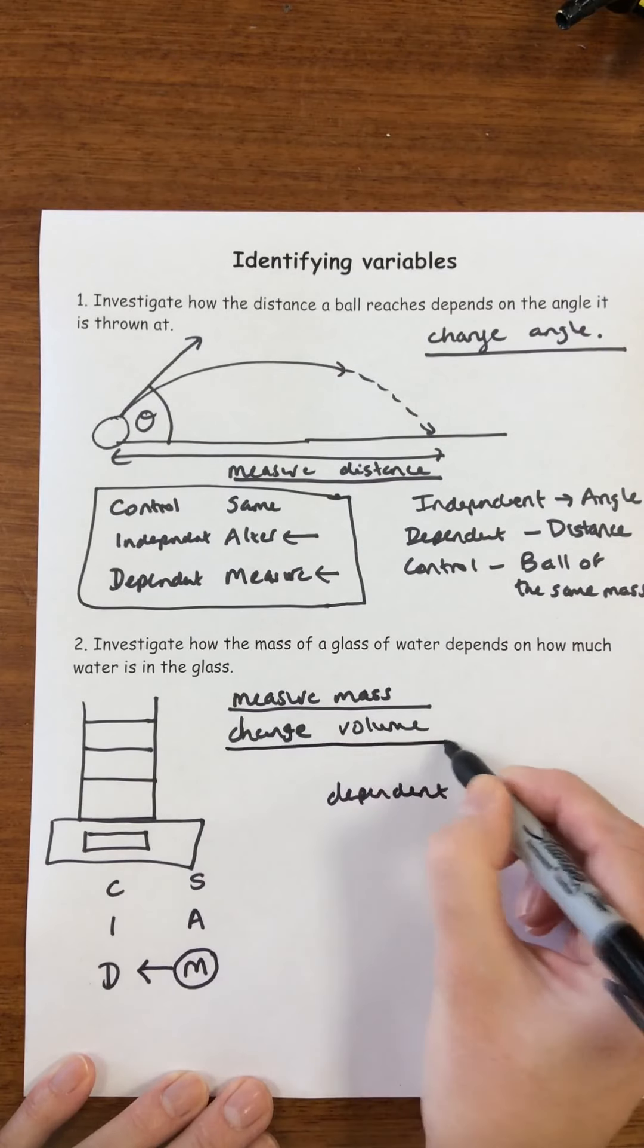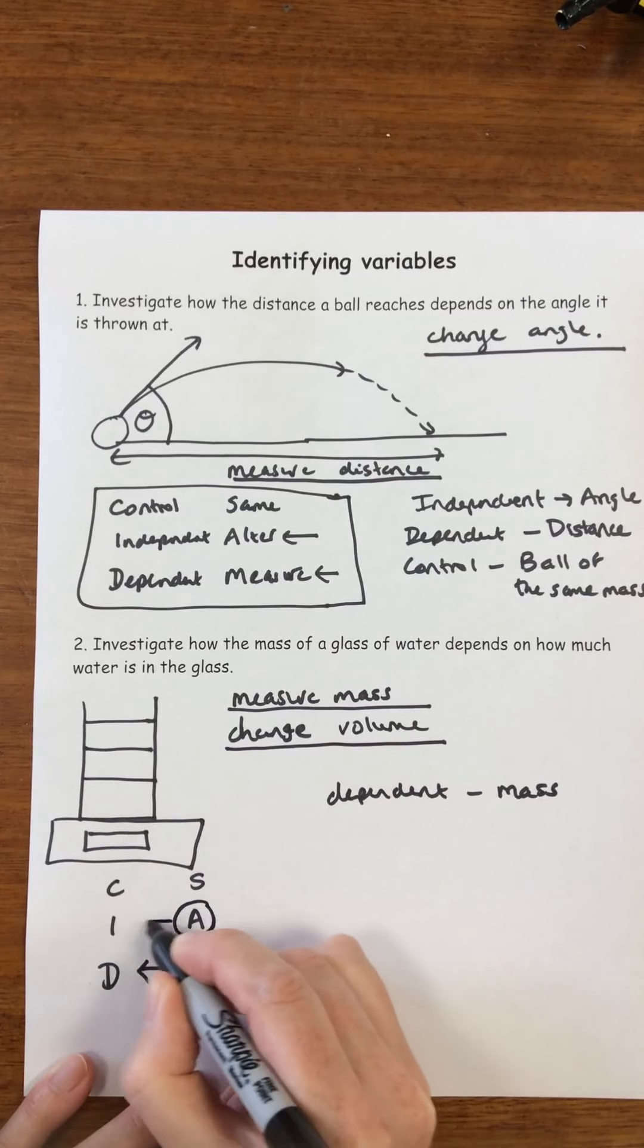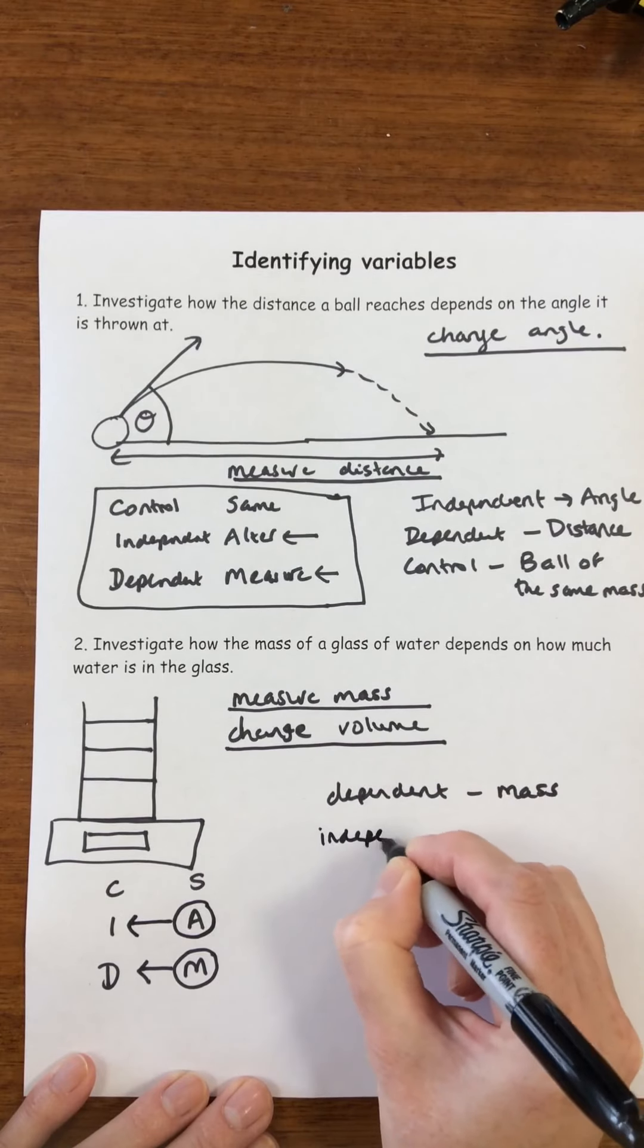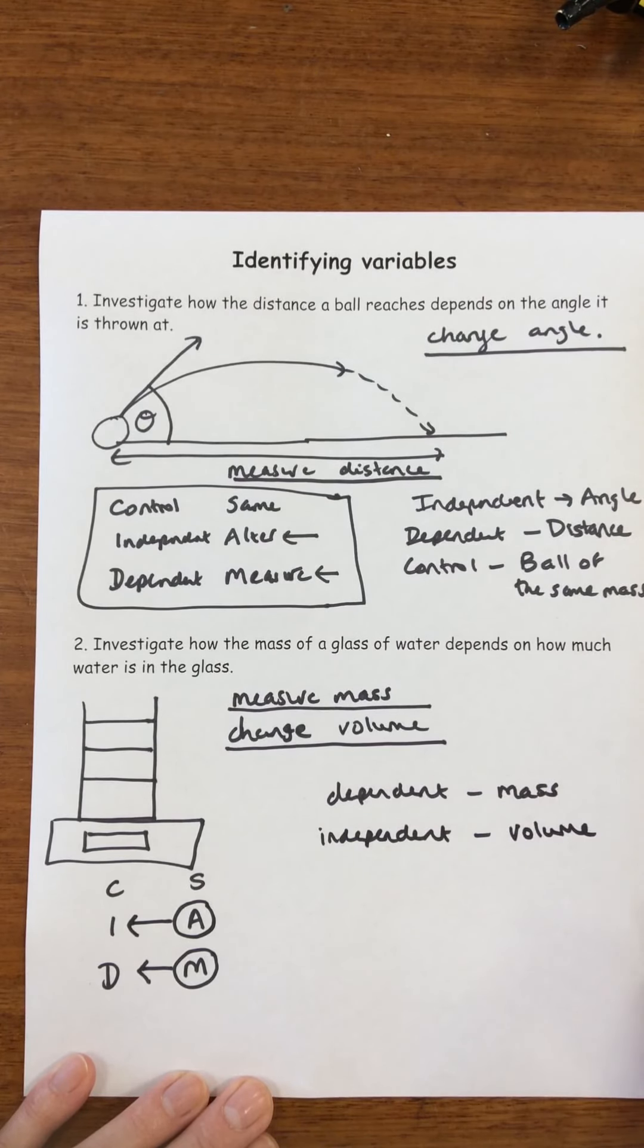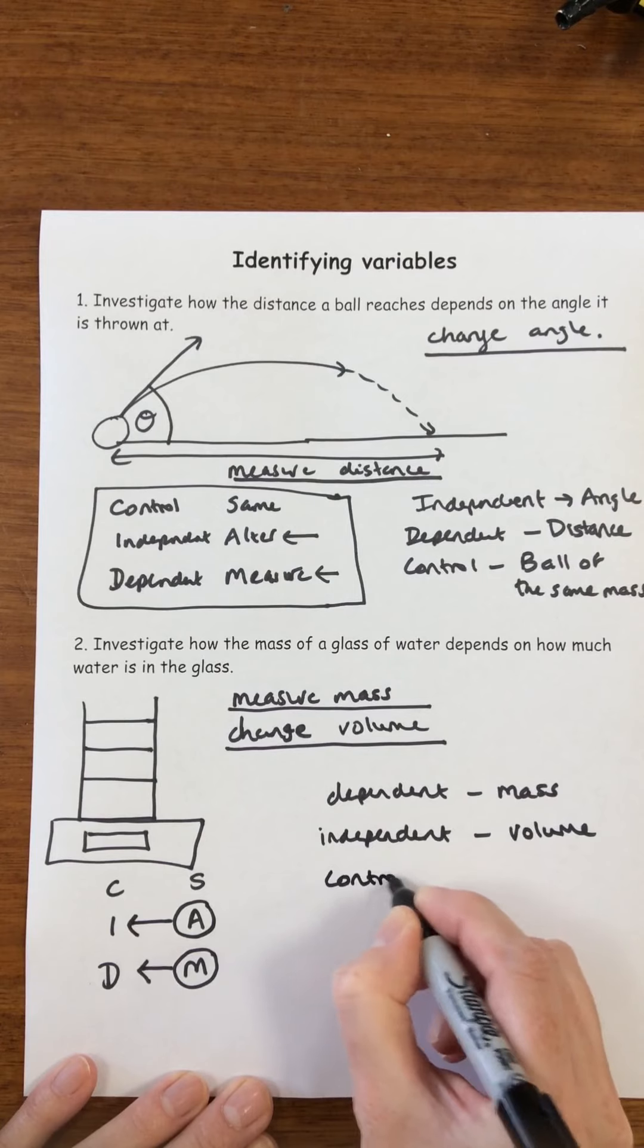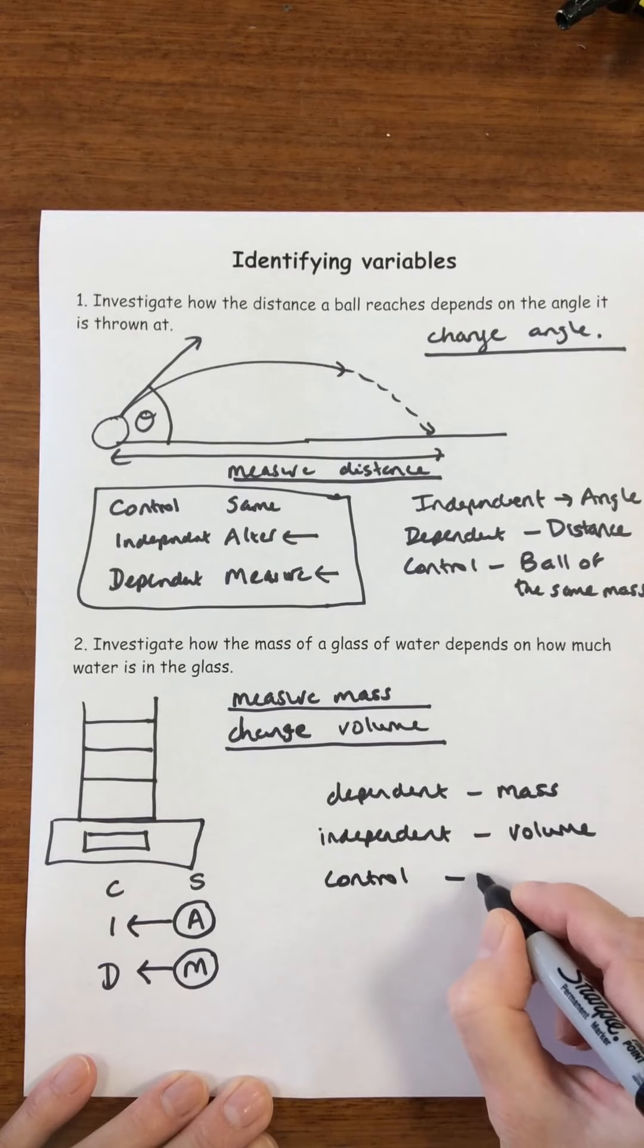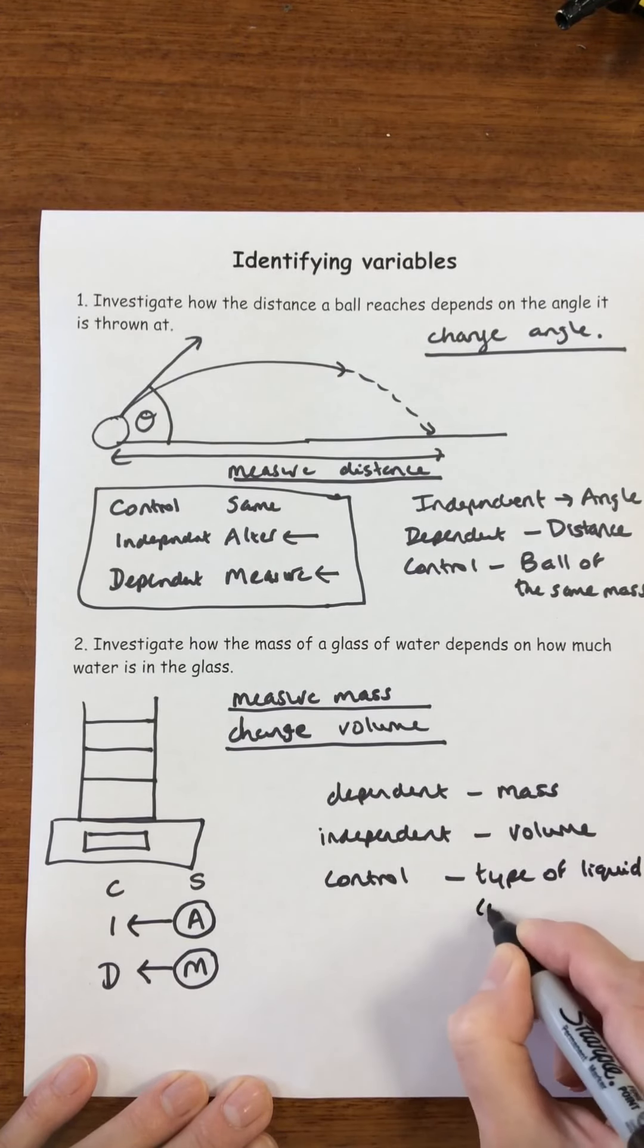We've said that we're going to change the volume. Change means the same as alter, so that's over here. So our volume is going to be our independent variable. And what are we going to keep the same? Well, we're not going to add water, then milk and orange juice. So one of the things we might control is the liquid, the type of liquid, which in our case is water.